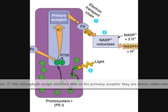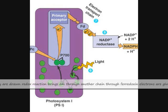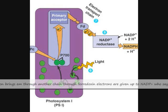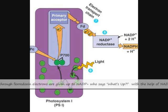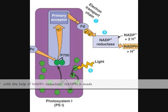P700 core accepts electrons, then to the primary acceptor they are drawn. A redox reaction brings it on through another chain, through ferredoxin. Electrons are given up to NADP+, and with the help of NADP+ reductase, NADPH is made.